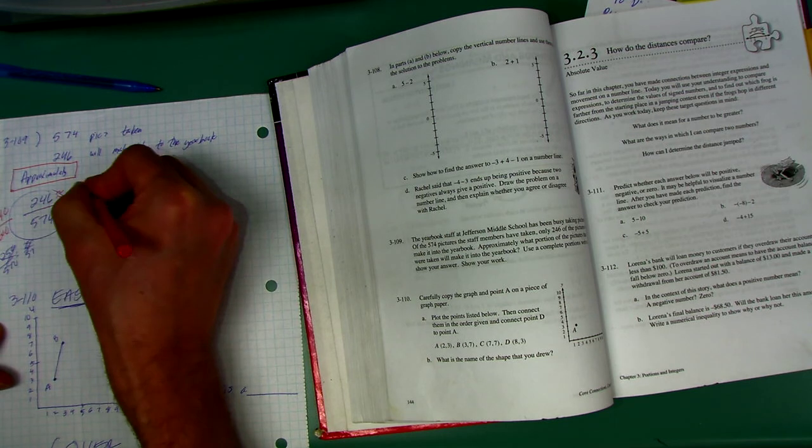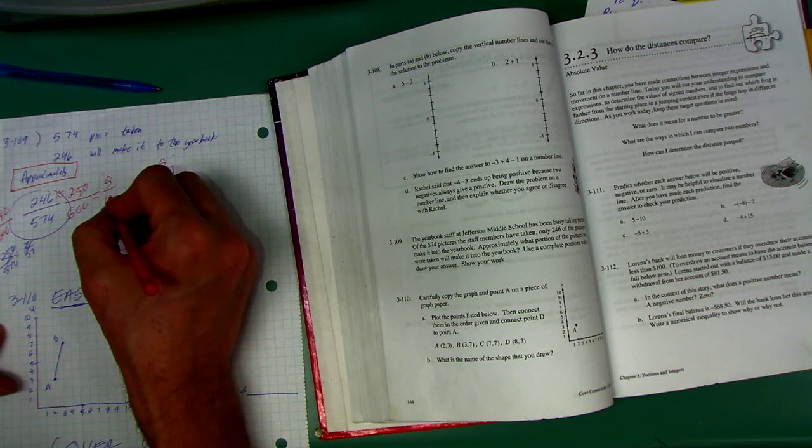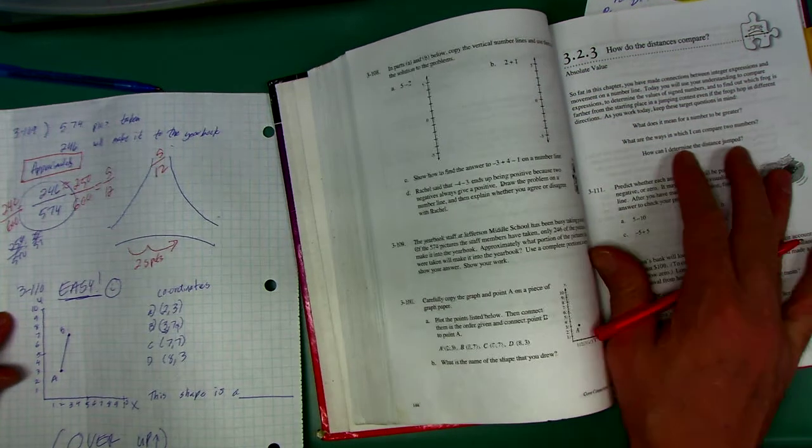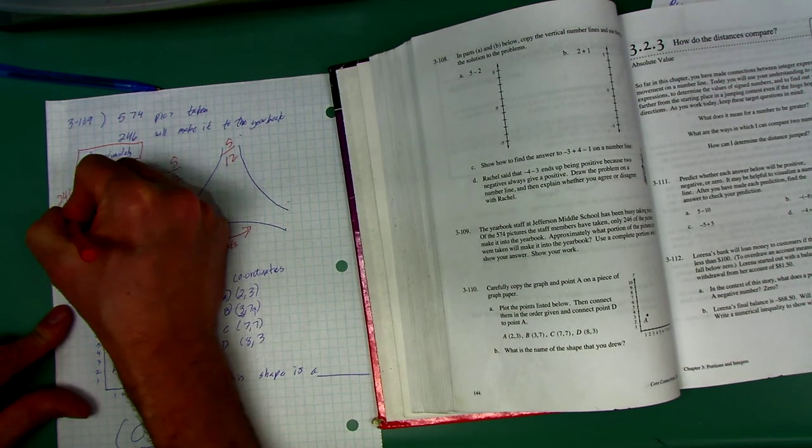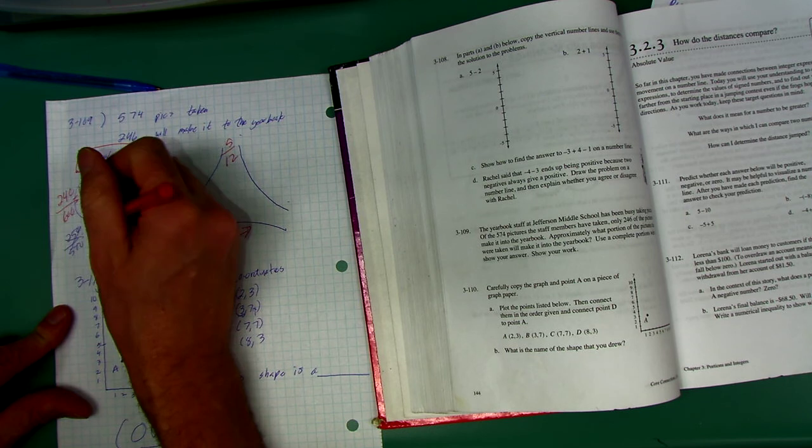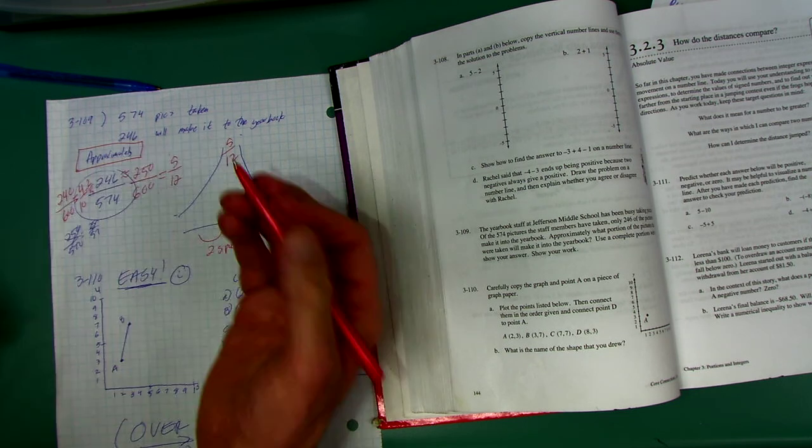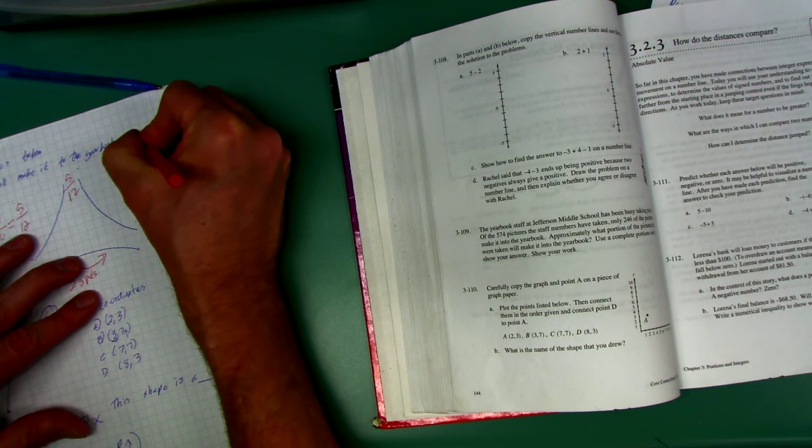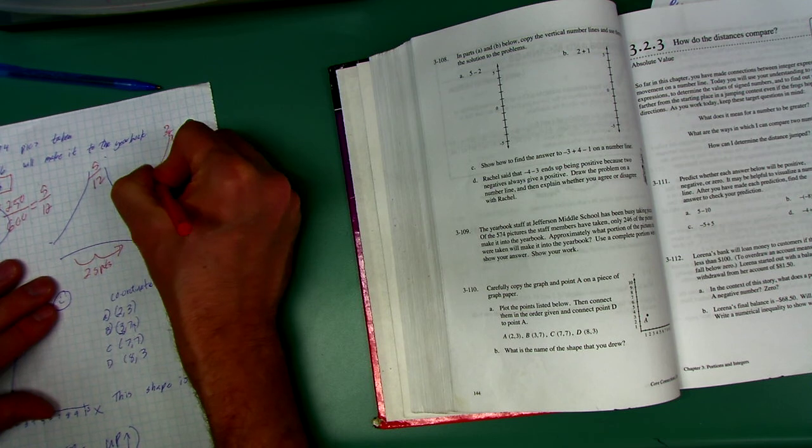If you did 250, that would simplify. You'd say 50 goes into that 5 times. 50 goes into 600 12 times. And you have 5 twelfths. Here, if you did 60, you'd say 60 goes into 240 4 times. And 60 goes into that 10 times. Both of those are even. So, 2 goes into 4 twice. And goes into 10. So, I could make this 2 fifths if you wanted. If you made it 2 fifths, it was a little bit easier than 5 twelfths.